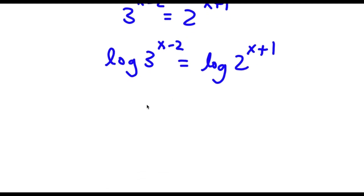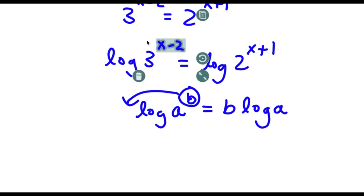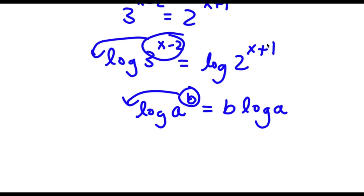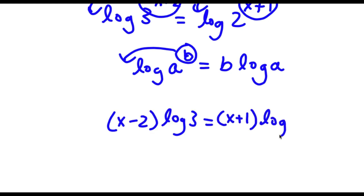Now if I have something in the form log of 3 to the power of b, I can simply move this exponent b to the front of the logarithm. So this is going to equal b times log 3. So in this case I can move both x minus 2 to the front as well as x plus 1 to the front. Now I have x minus 2 times log 3 is equal to x plus 1 times log 2.